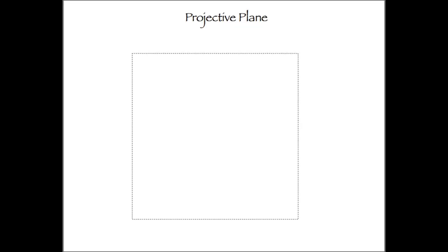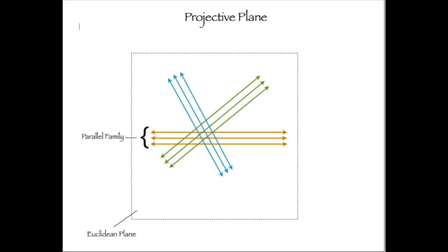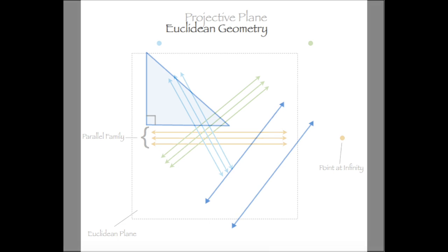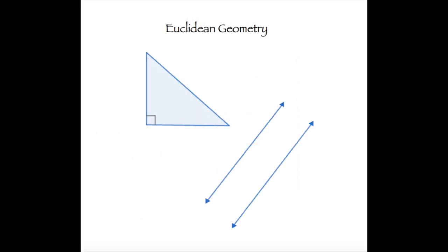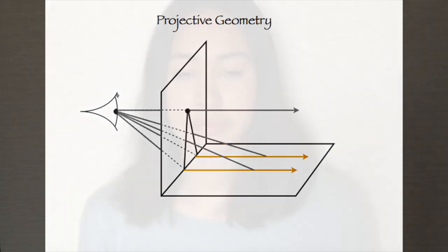There's a slight problem with all this, though. We saw that parallel lines in the Euclidean plane will never meet. To remedy this, we have to take our lines to a new place: the projective plane. The projective plane is composed of two parts — the Euclidean plane with all those families of parallel lines, and our new points at infinity. By making this shift to the projective plane, we move from the world of Euclidean geometry to a different type of geometry that de Sarga helped to found: projective geometry.